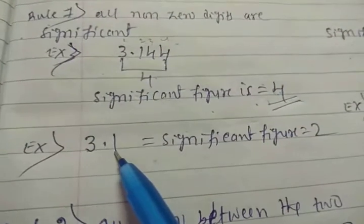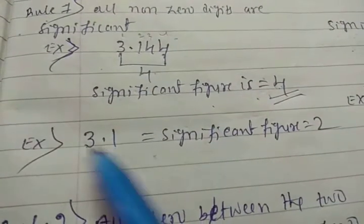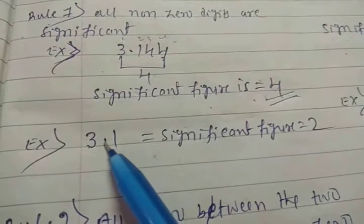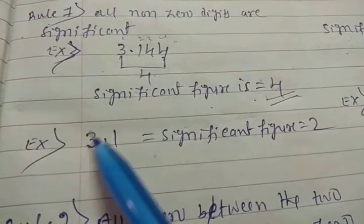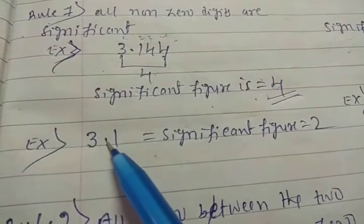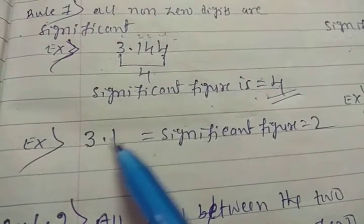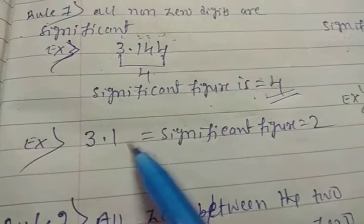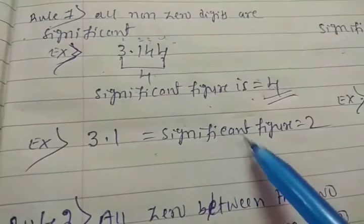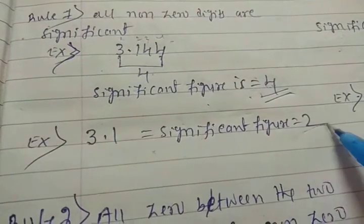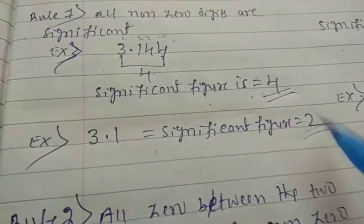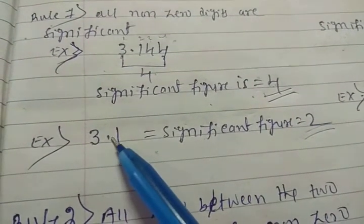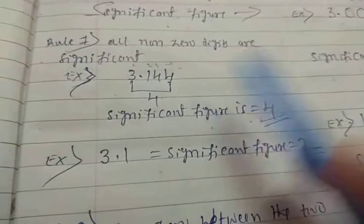Another example: 3.1 — how many zeros are there before or after the point? There is no zero present, so all non-zero digits are significant. Therefore the significant figure is 2.